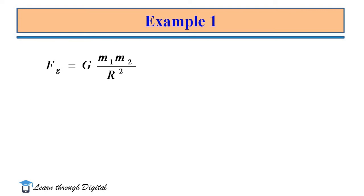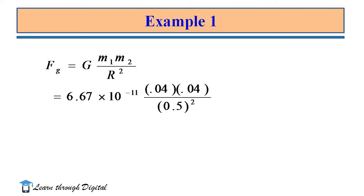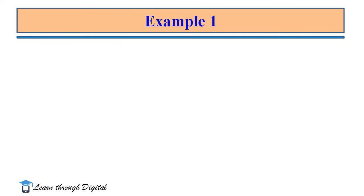As we know, the gravitational force is Fg = G·m₁·m₂ / R². We substitute the gravitational constant 6.67 × 10⁻¹¹ and also substitute the masses m₁ and m₂ as 40 grams, and the distance between the two masses as 50 cm. We must write values in SI units — kilograms and meters. We get Fg = 4.27 × 10⁻¹³ Newtons.